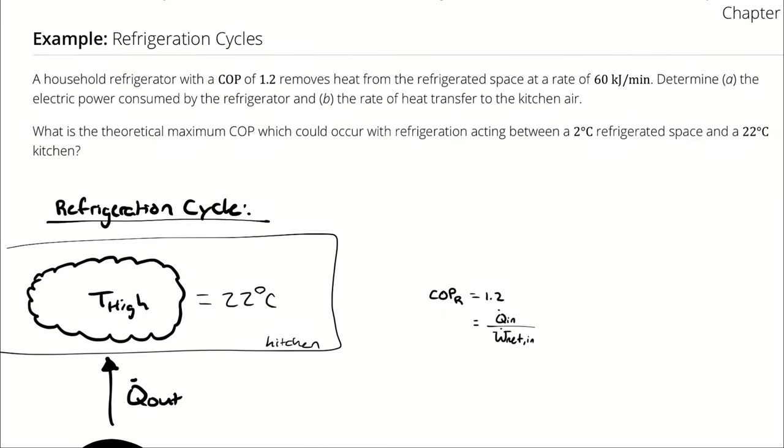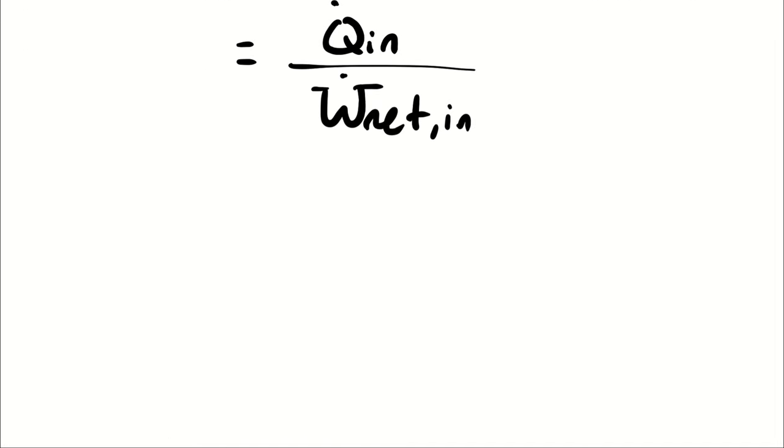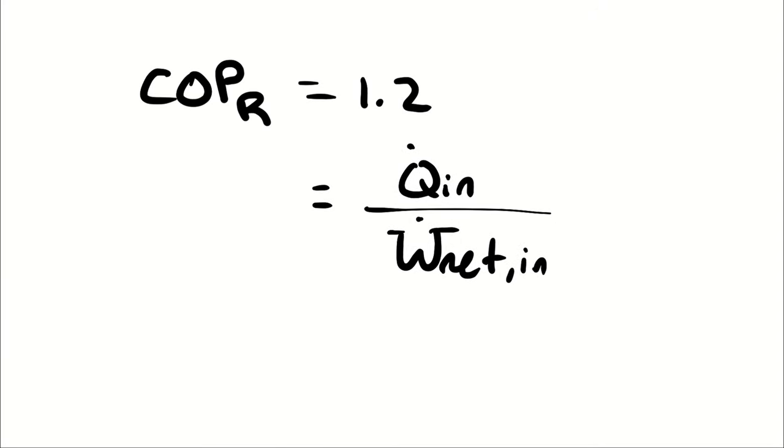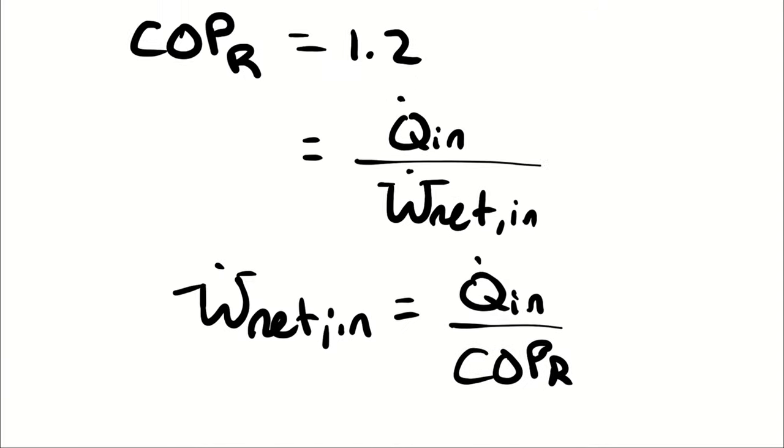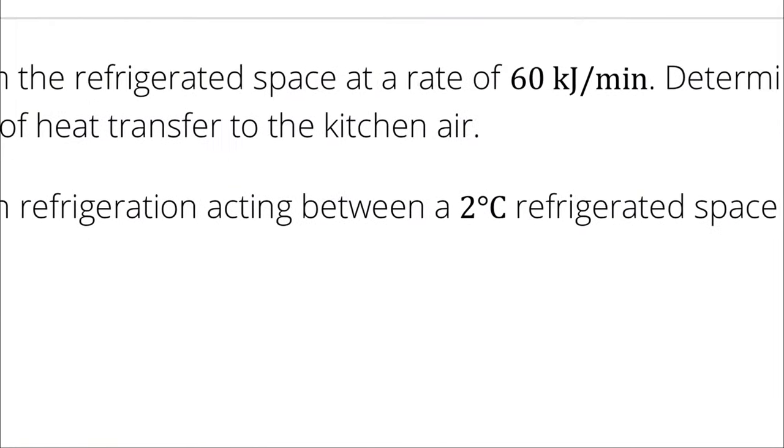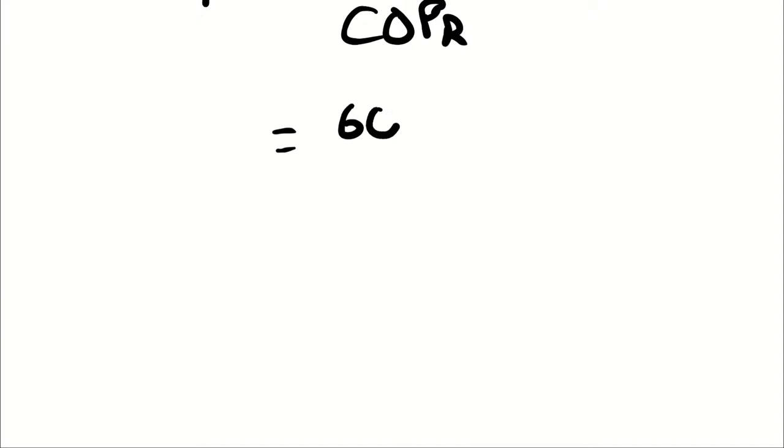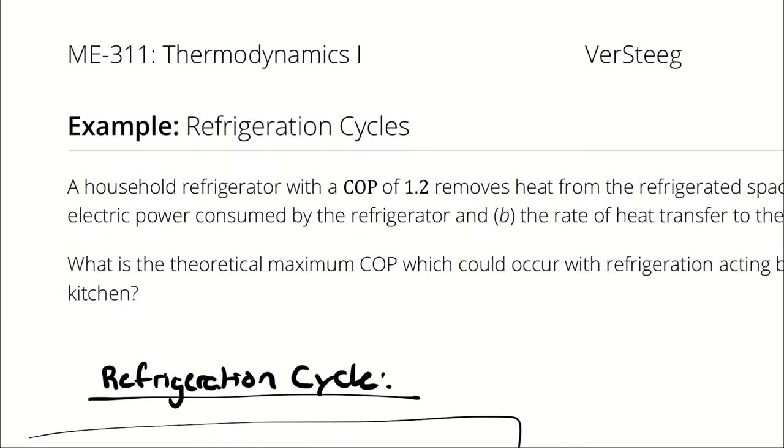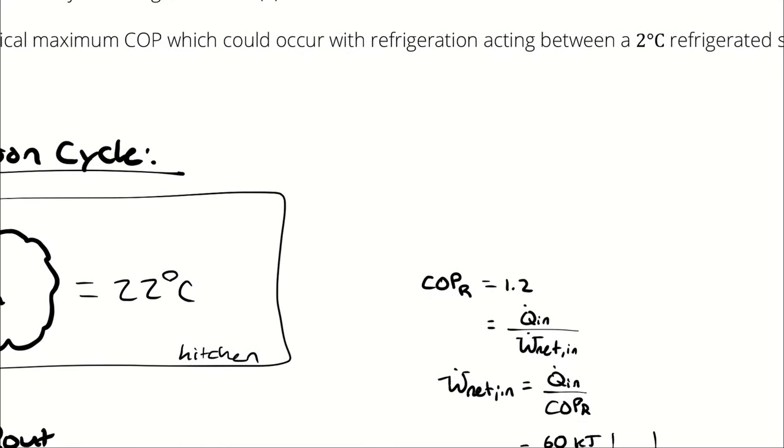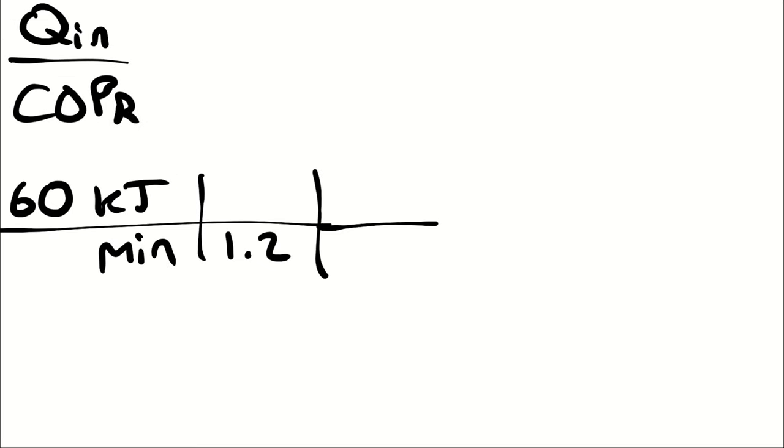The first thing I asked was the electric power consumed by the refrigerator. So that's asking for network in. To figure that out, I can take Q_in divided by COP_R. That number again was 60 kilojoules per minute, and my COP_R was 1.2. I didn't ask for a specific unit in this example problem, but let's say that I wanted to know the electrical power in kilowatts. Well, a kilowatt is a kilojoule per second.